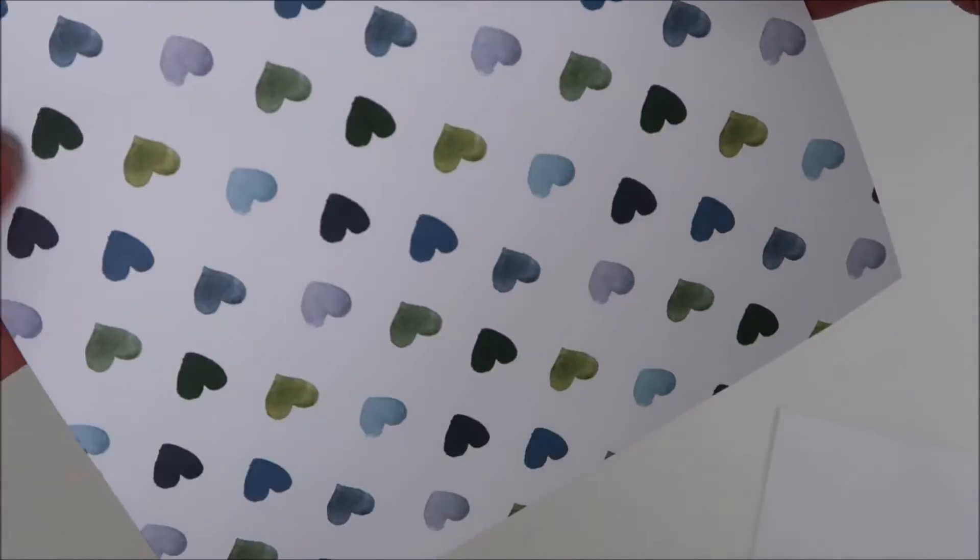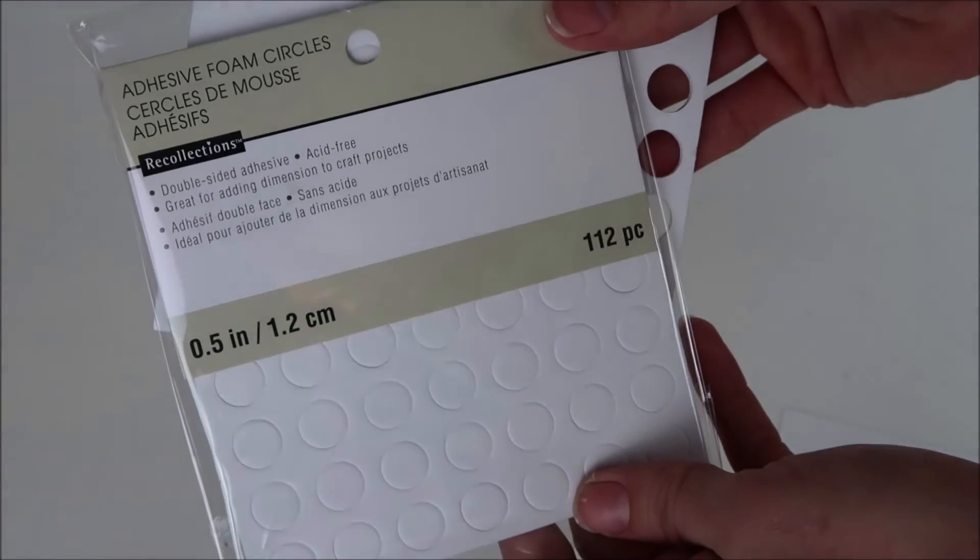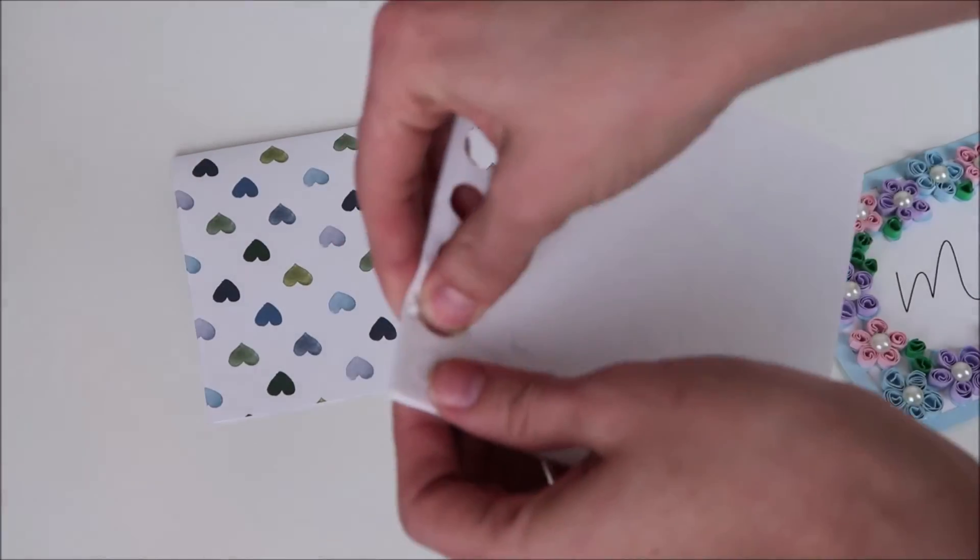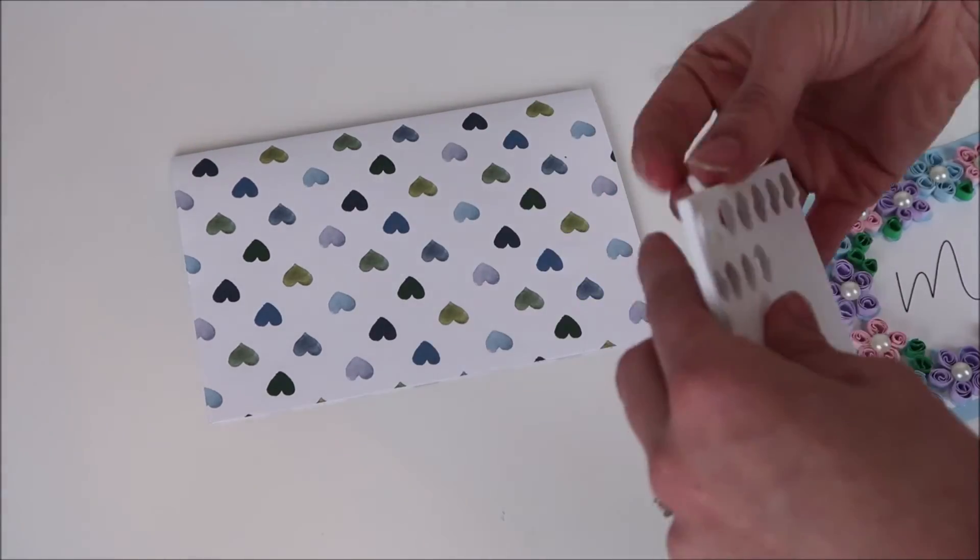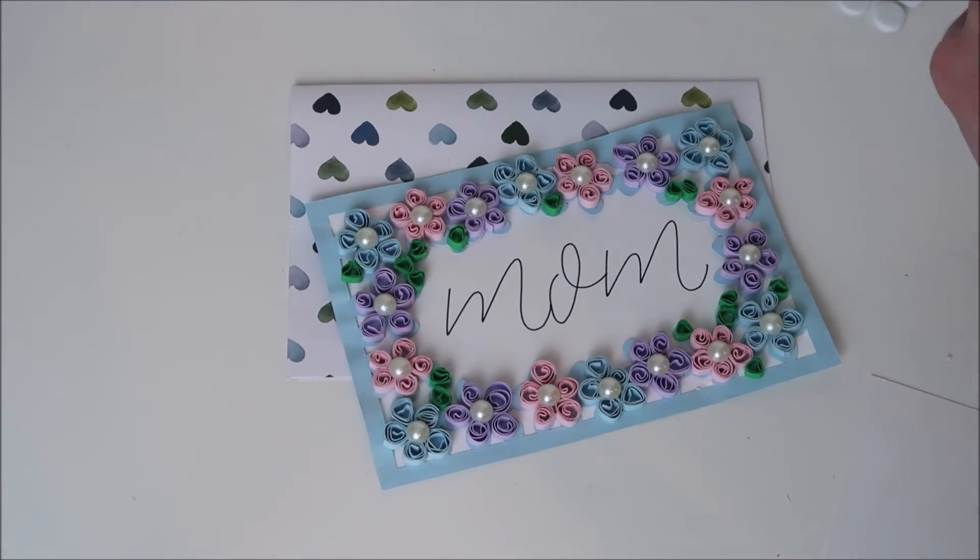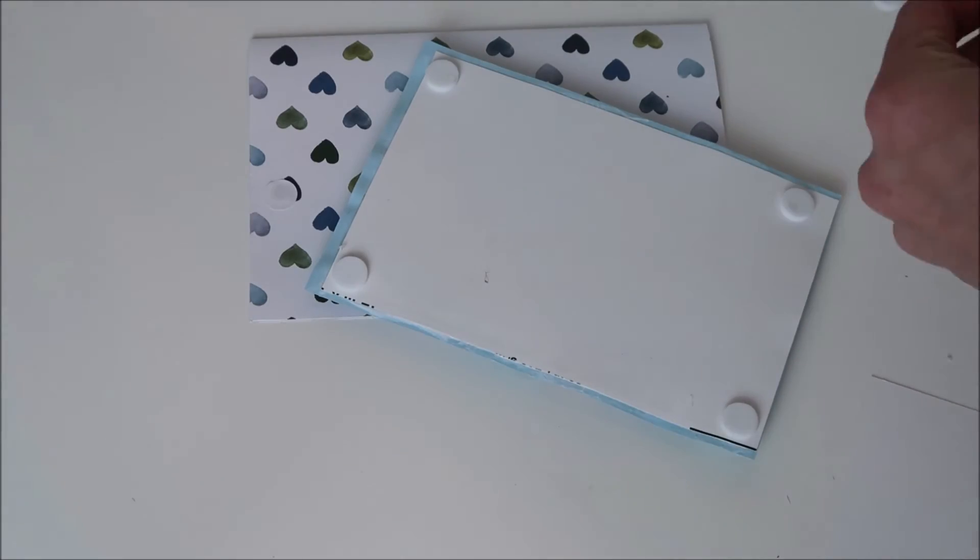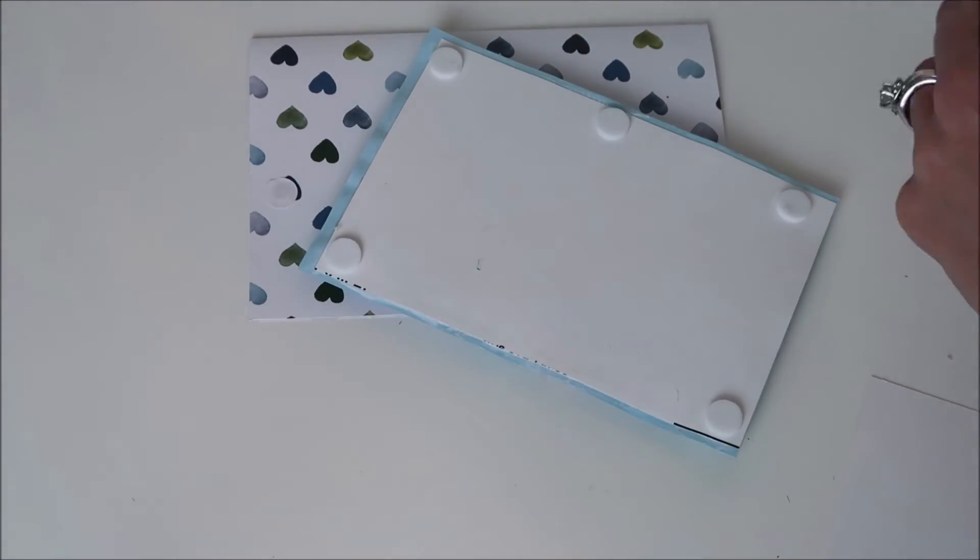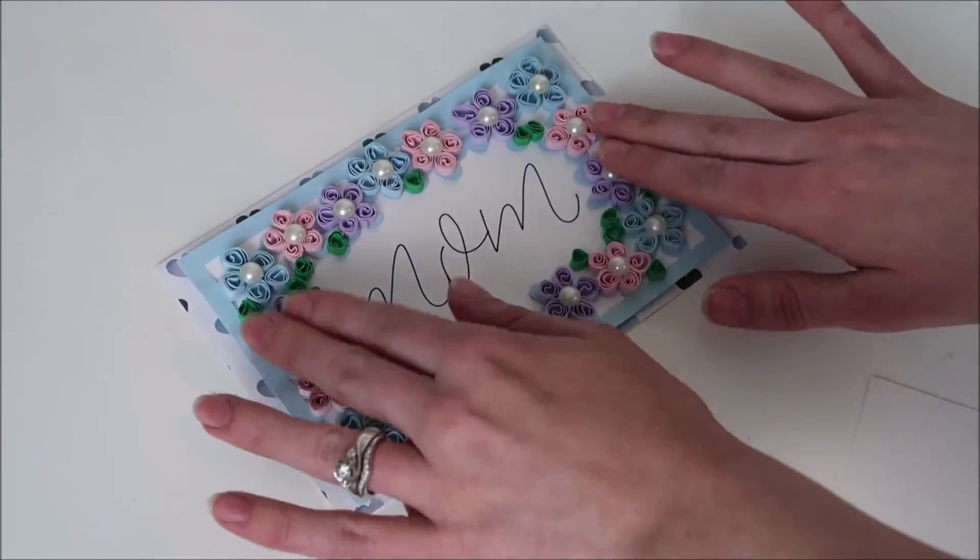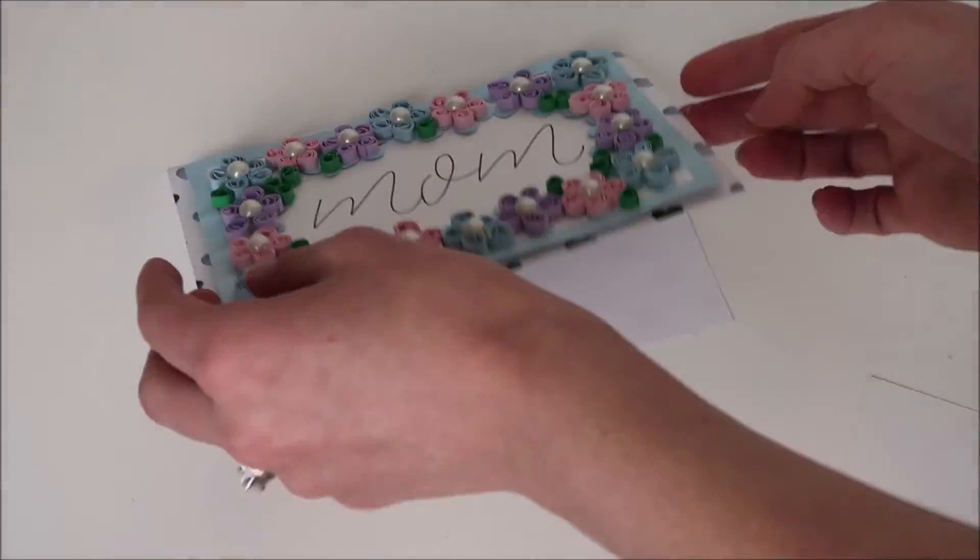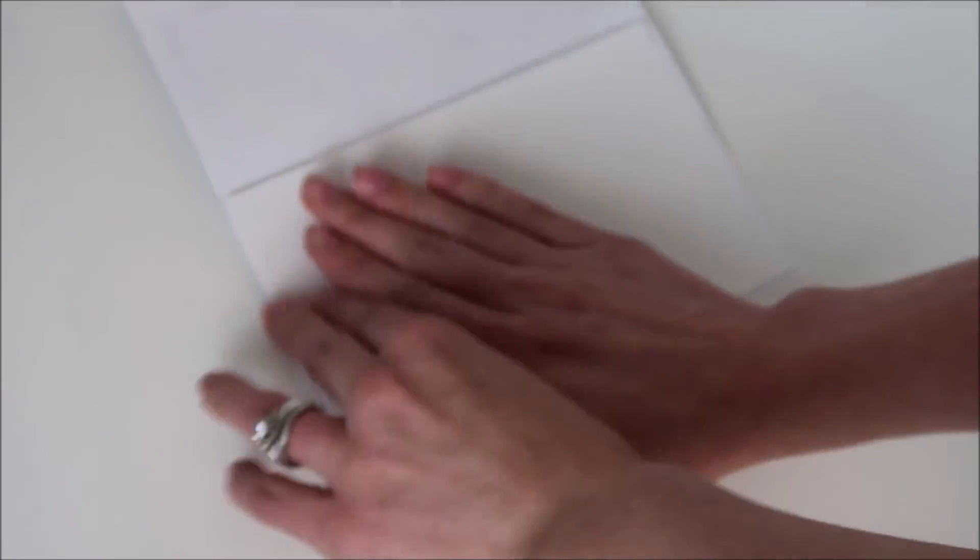Next I fold my pattern piece down. Then I take my adhesive foam circles and place this on my cardstock and this will give the card some volume. The other white piece I glue and place it on the inside of the card.